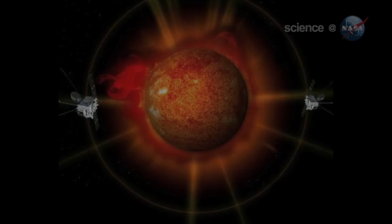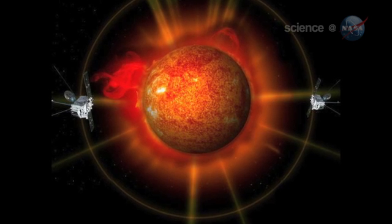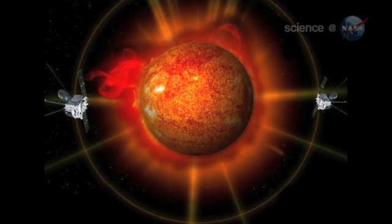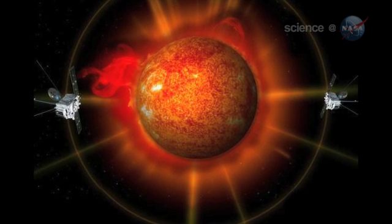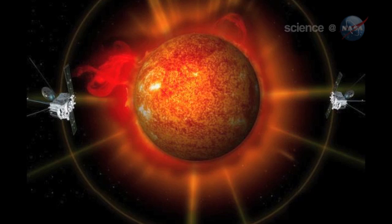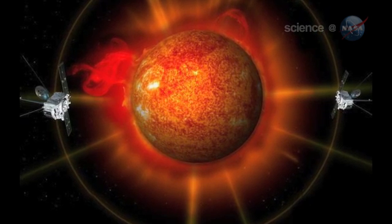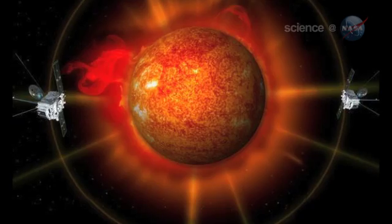NASA's twin STEREO probes also monitored the comet's approach. With three points of view—SOHO plus STEREO A and STEREO B—researchers could get a good fix of the comet's orbit. It was definitely a Kreutz sungrazer, says Battams.